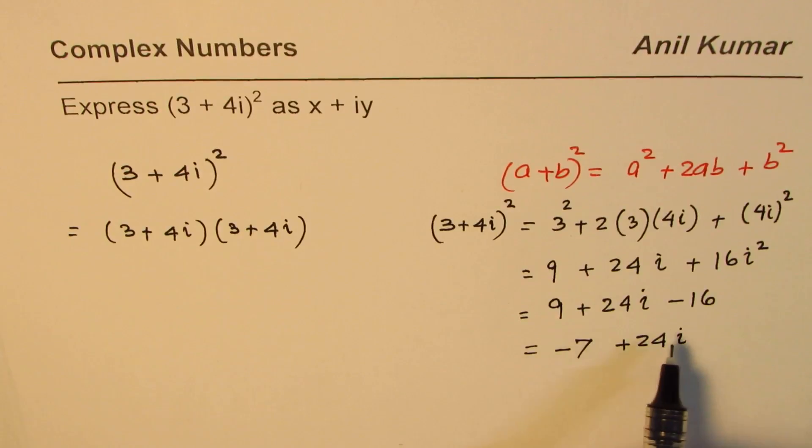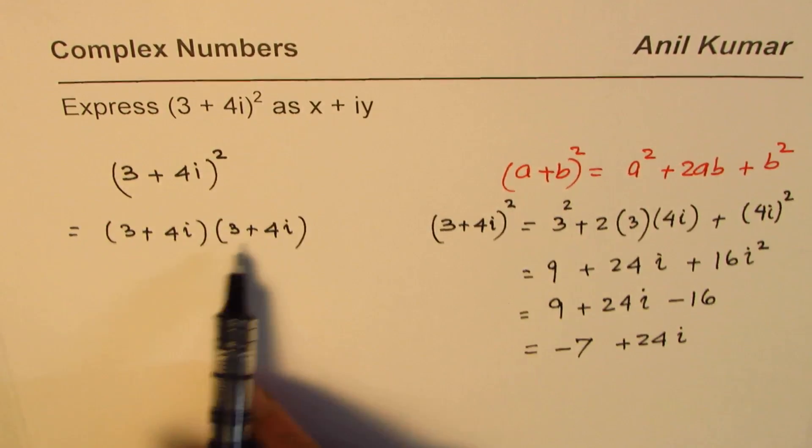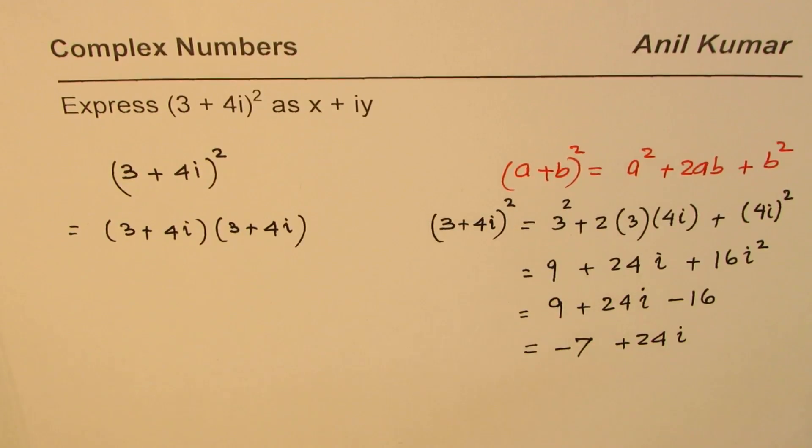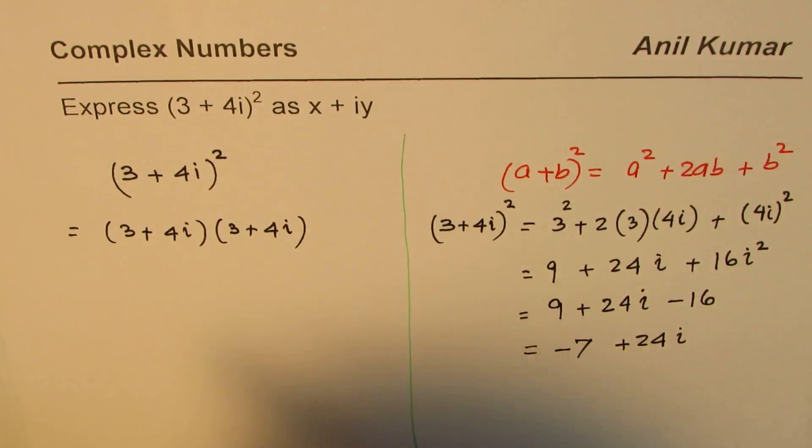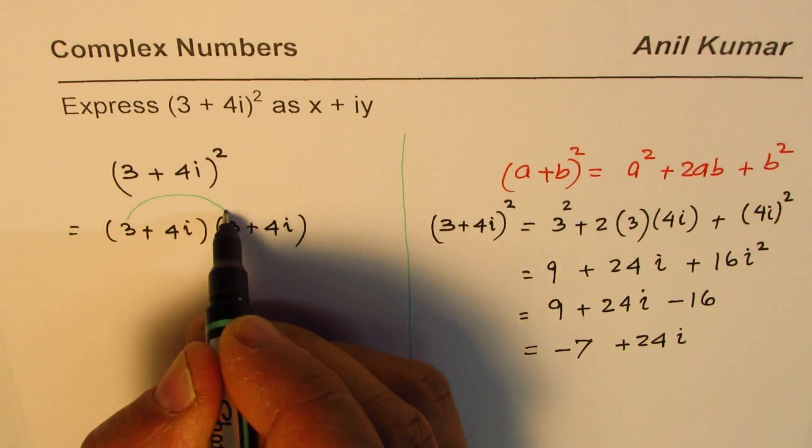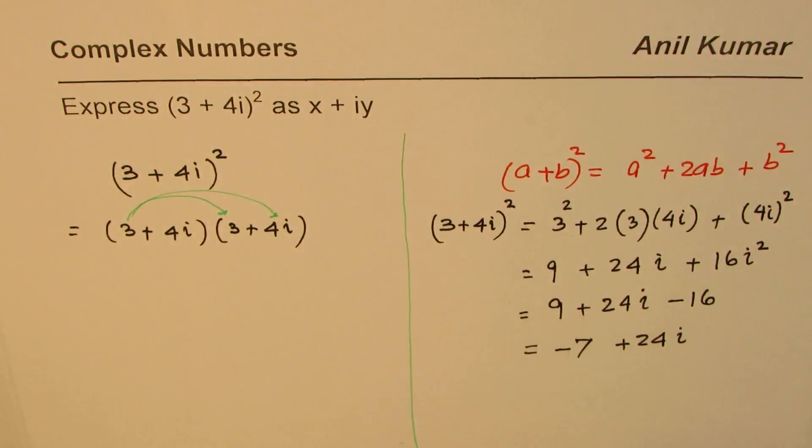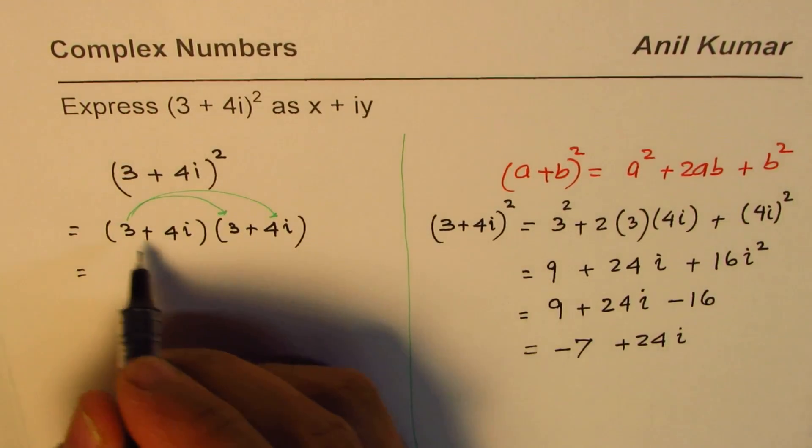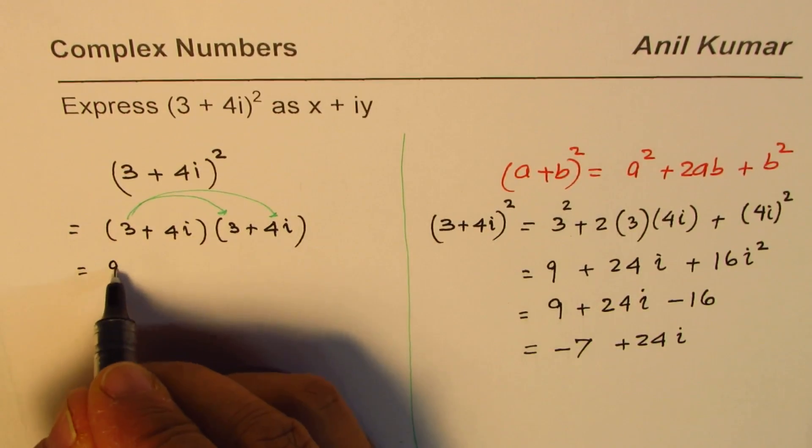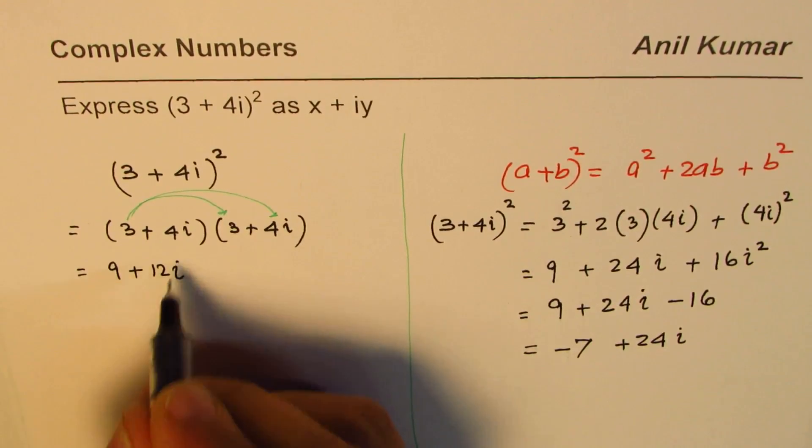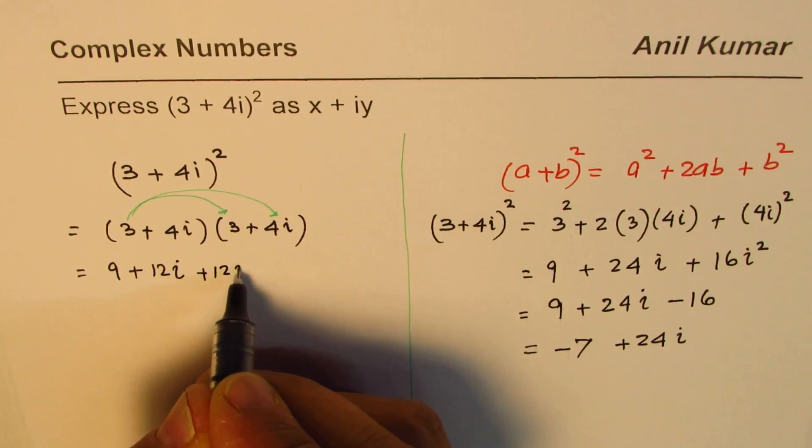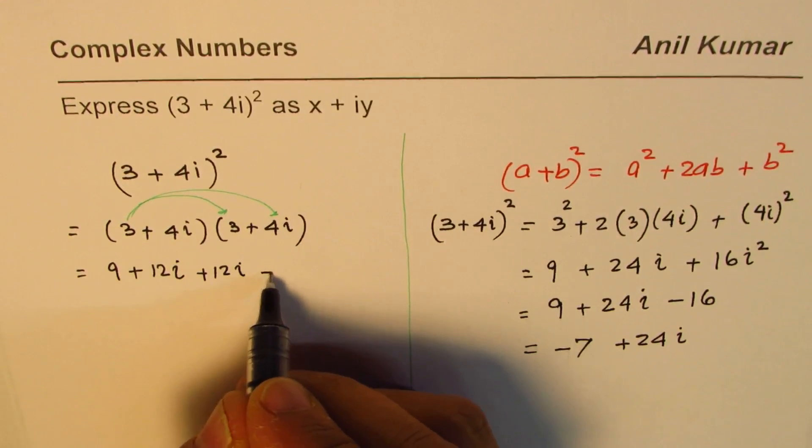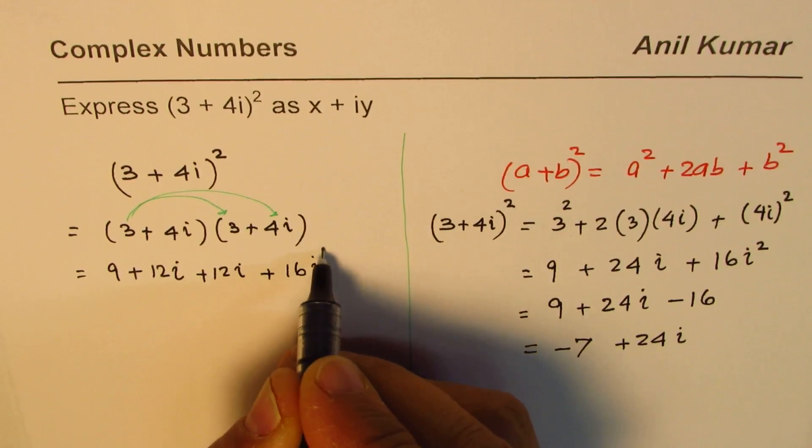Now let us do the same thing. Let us see whether we get the same answer from the other method. We are just expanding. We will apply the distributive property, multiplying first with first term. 3 times 3 is 9 plus 3 times 4 is 12i. 4i times first term gives plus 12i, and 4i times 4i gives plus 16i square.